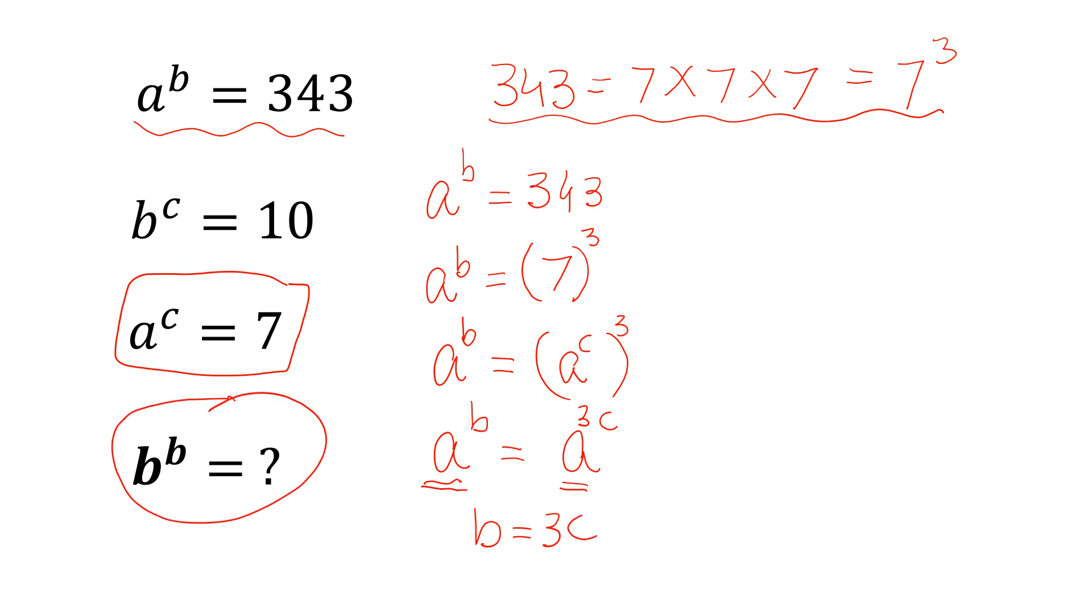Now we will find b to the power of b. We can write it as b to the power of 3c, because b equals 3c. We can write this in the form b to the power of c, all to the power of 3. Multiplying the powers, we get the same result.